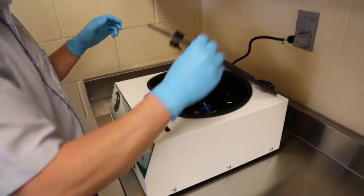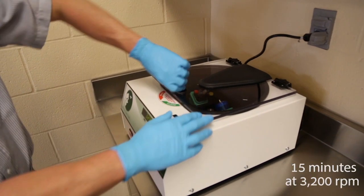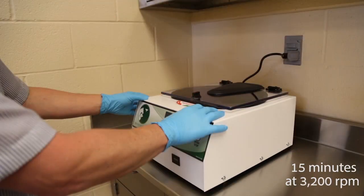Close the centrifuge lid and secure by turning the latch clockwise. Set the RPM to 3200 and time to 15 minutes and push the start button.